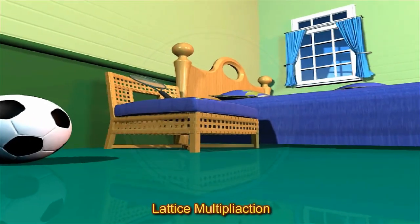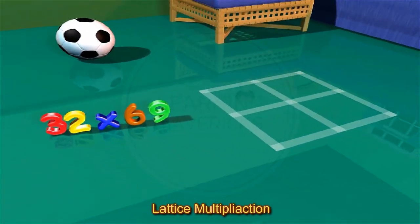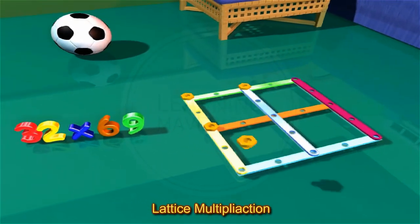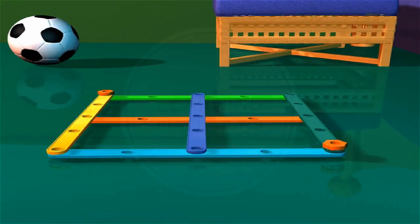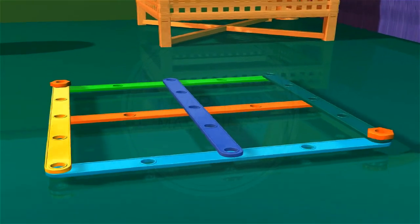Lattice multiplication is a method of multiplying two numbers using a grid. The grid has rows and columns. In the grid a diagonal is drawn through each box from the upper right corner to the lower left corner.